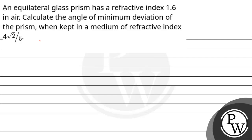Hello Bacho, let us read this question. An equilateral glass prism has a refractive index 1.6. Calculate the angle of minimum deviation of the prism when kept in a medium of refractive index 4√2 by 5.